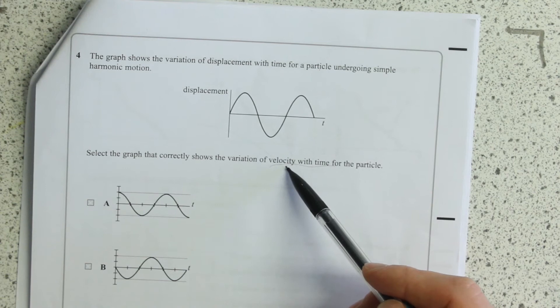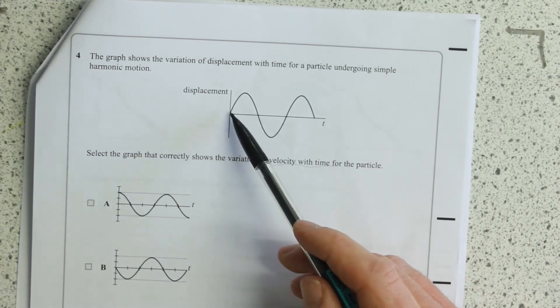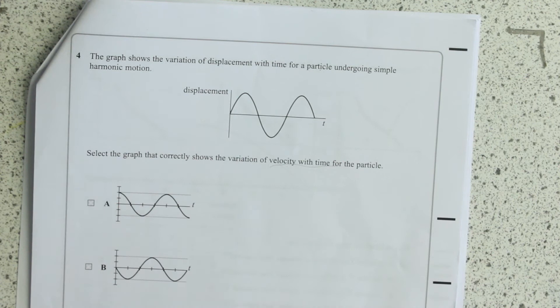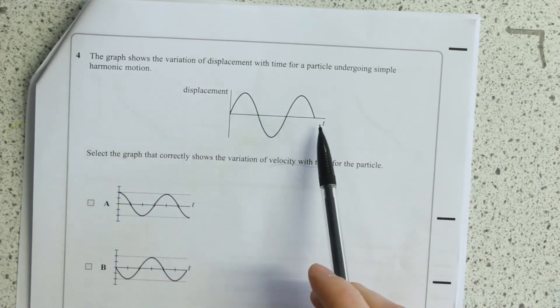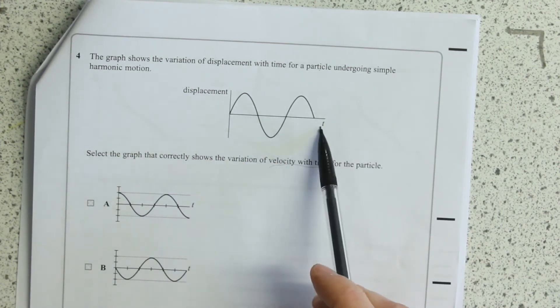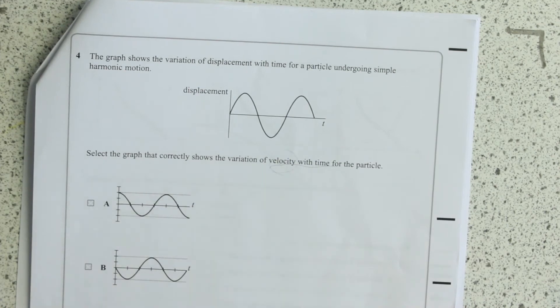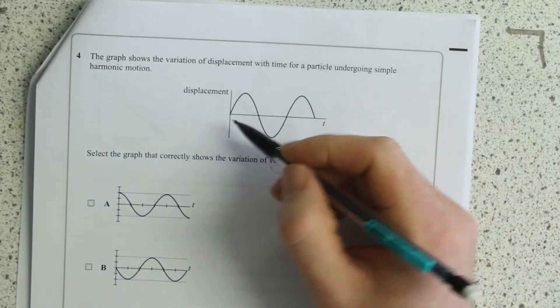Well, a velocity-time graph displays the gradient of a displacement-time graph, because if I do displacement divided by time or dy by dx, then I get velocity.